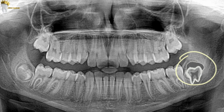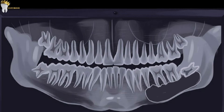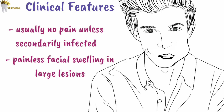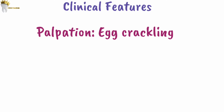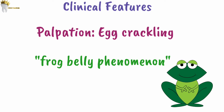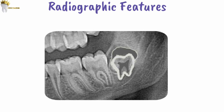These cysts are usually small and asymptomatic, so they are only diagnosed accidentally on radiograph taken for another reason. There is a chance they can grow to a considerable size and cause bony expansion, but usually patients feel no pain unless there is secondary infection. A painless facial swelling may be seen when the cyst is large, and it can cause marked expansion of the cortices of the jaw through resorption of cortical bone, producing an egg-crackling feeling on palpation, also called the egg-shell crackling or 'frog belly' phenomenon.